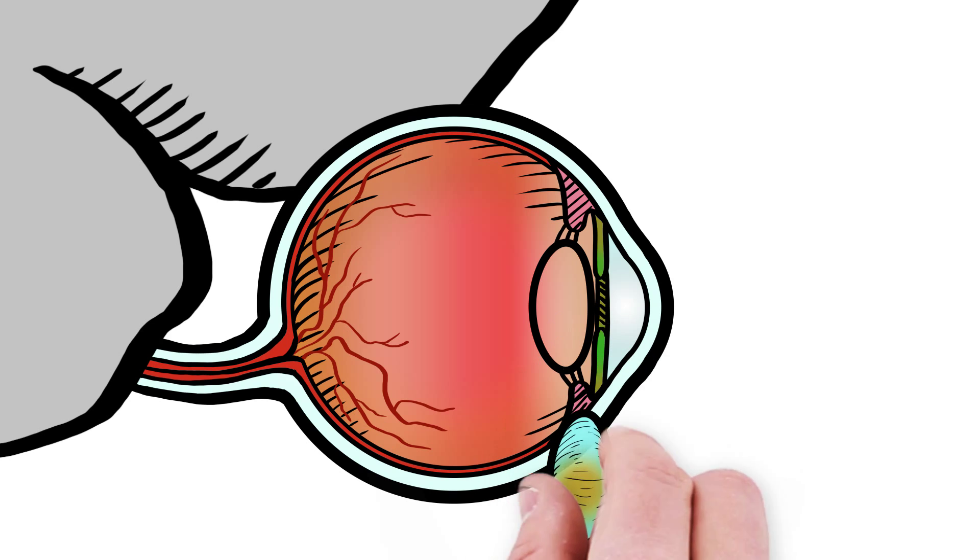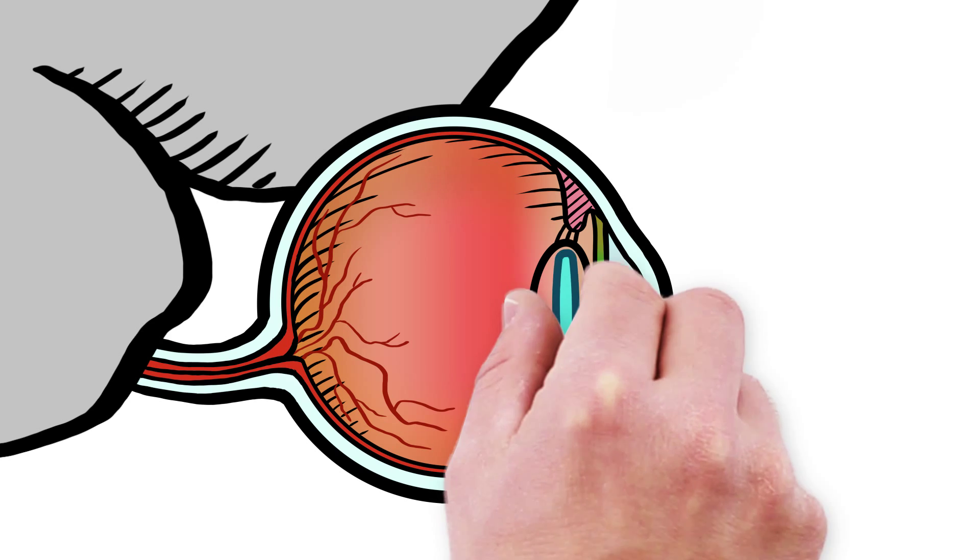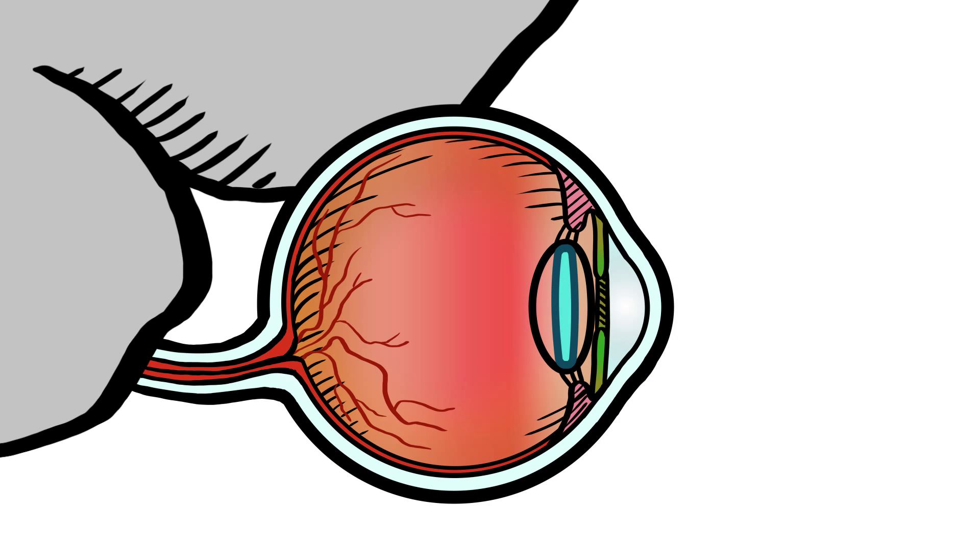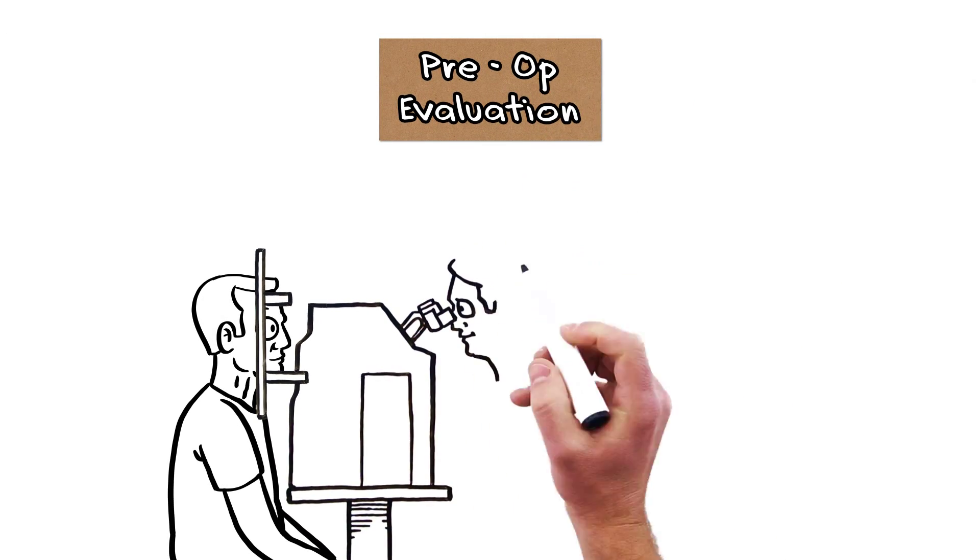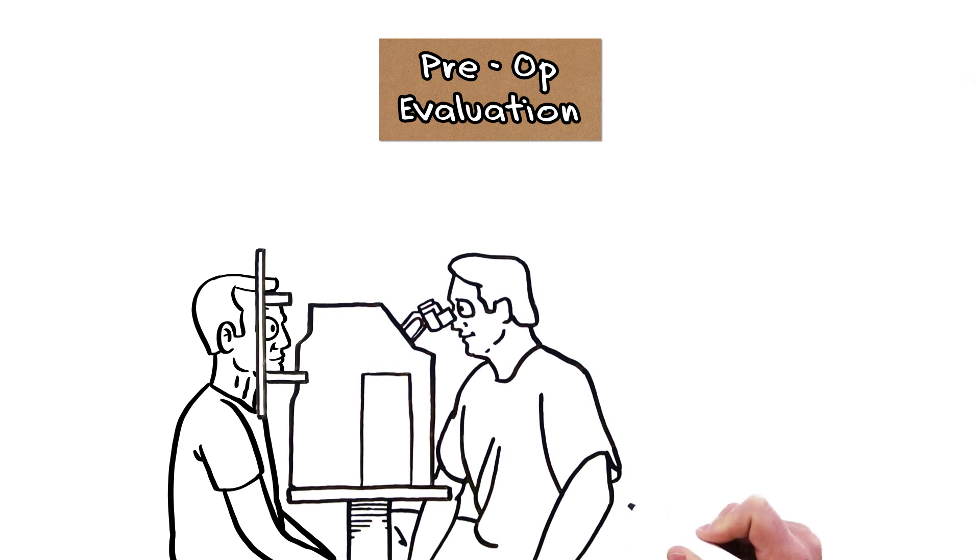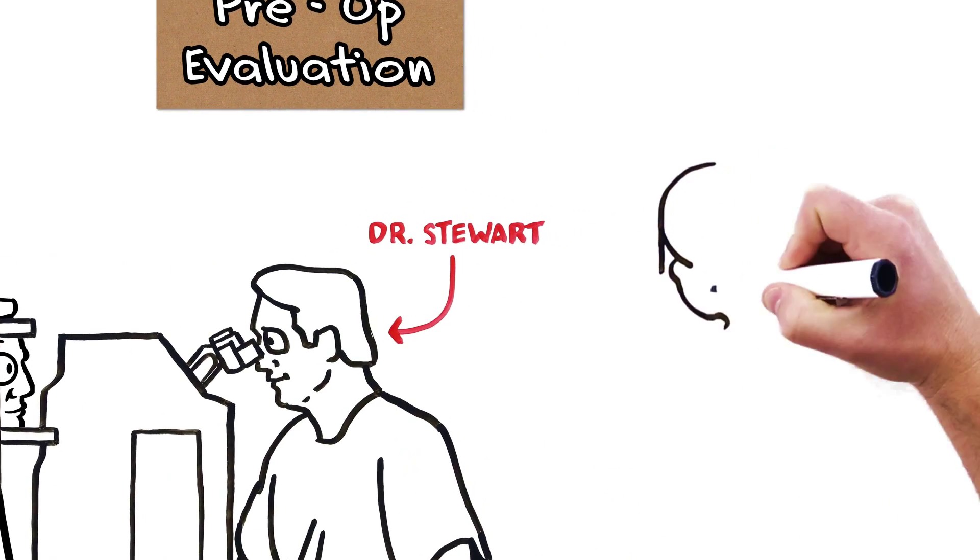To do this, the cataract is removed and replaced with an artificial lens, usually made of silicone or an acrylic material. Using advanced diagnostic and testing equipment, the specifics of your eye are measured, allowing Dr. Stewart to choose the correct lens for you.